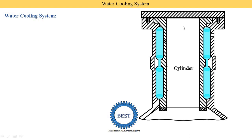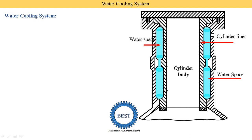This is the engine and this is the cylinder body. The inside part is known as the cylinder liner. This is the water space, also known as the water jacket, and it is provided in the cylinder body. When the cylinder is heated due to combustion, this heat energy is absorbed by the cylinder liners. We need to cool the cylinder liner, and this cylinder liner is cooled by using the water space.